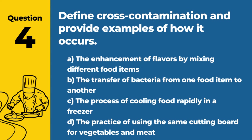Question 4. Define cross-contamination and provide examples of how it occurs. Answer: B. The transfer of bacteria from one food item to another. An example includes using the same cutting board for raw chicken and then for chopping vegetables without proper cleaning in between.